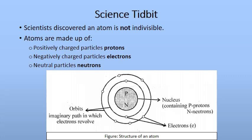In the diagrammatic representation of an atom, you can see a bigger circle in the middle called the nucleus — the main solid, hard part of the atom. It contains positively charged protons and neutral neutrons. Around the nucleus are imaginary orbits, and negatively charged electrons revolve in those orbits. This structure resembles our solar system: the sun is at the center with planets revolving around it in imaginary paths — similarly, the nucleus is the center and electrons revolve around it.